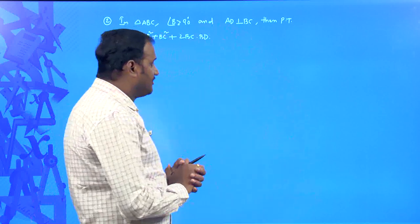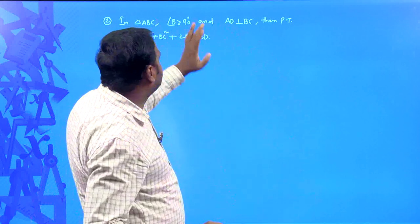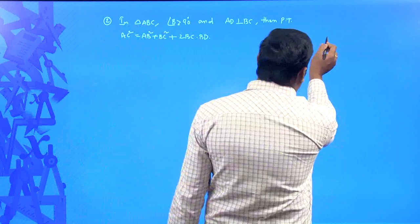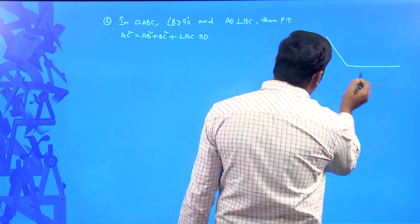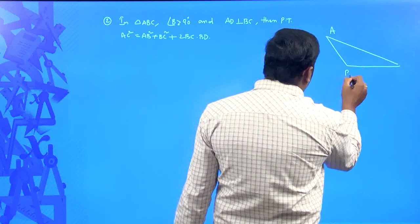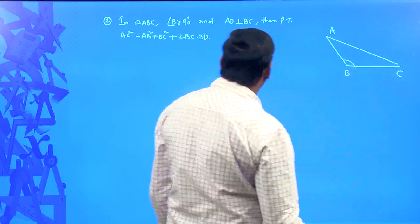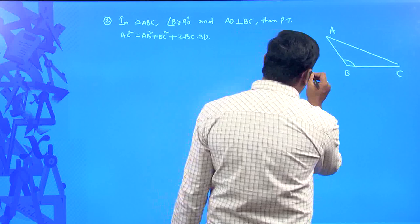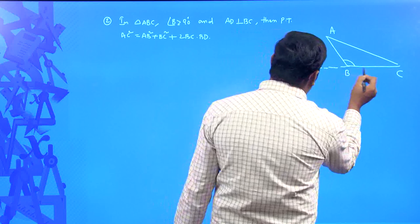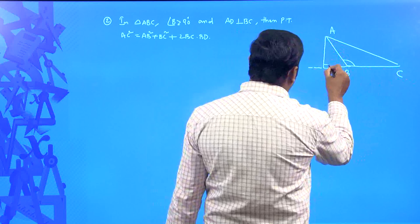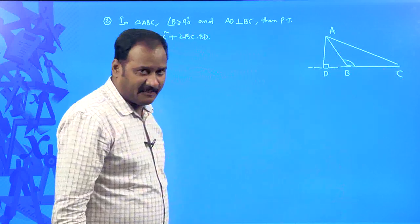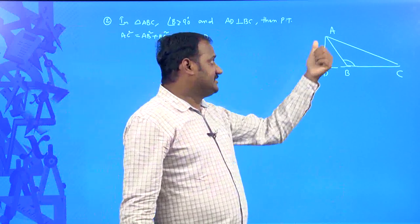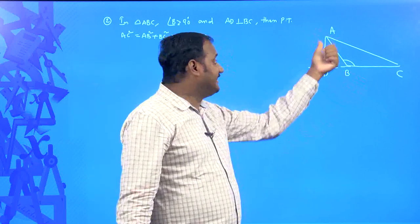When angle B is more than 90 degrees and AD is drawn perpendicular to BC, you need to produce side CB and then draw a perpendicular from A onto the extended line. This gives AD perpendicular to BC. There are two right angle triangles in this figure: triangle ADB and triangle ADC.